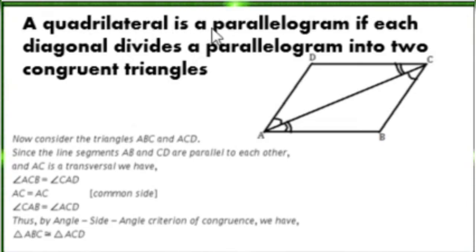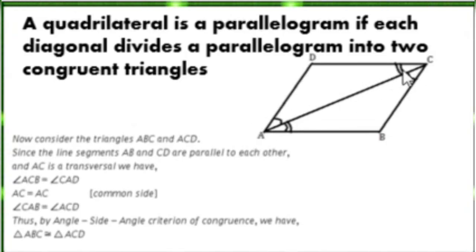Last condition: a quadrilateral is a parallelogram if each diagonal divides a parallelogram into two congruent triangles. We have here quadrilateral ABCD. Consider triangles ABC and ACD. Since line segments AB and CD are parallel to each other and AC is a transversal, angle ACD is equal to angle CAB. We have a common side, which is AC.